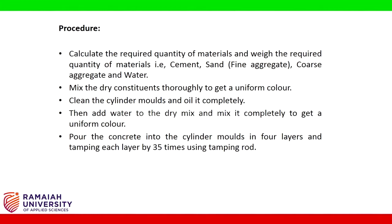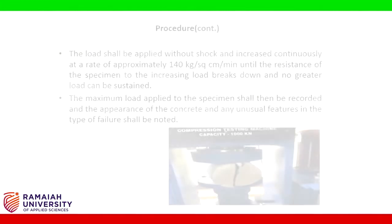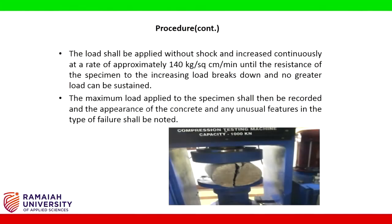Pour the concrete into the cylinder molds in four layers, tamping each layer 35 times using a tamping rod. Strike off the concrete on the top of the mold after casting. Keep the cylinder molds for air drying for about 24 hours, then remove the concrete cylinder from the molds and keep it for curing for about 28 days. Specimens are tested at 7 days and 28 days.